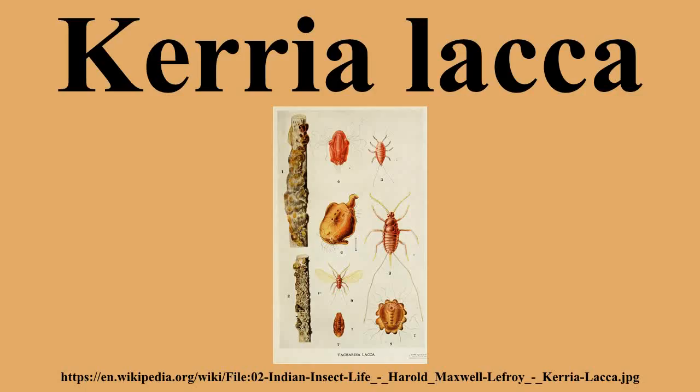Natural enemies of this species include several parasitoids, such as the parasitoid wasps Tachardiaephagus, Aphelinidae, and Coccophagus chishti. Predators include the moths Eublemma amabilis and Holcocera pulverea.